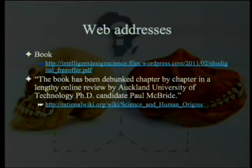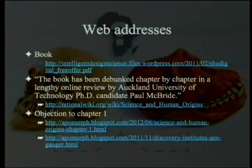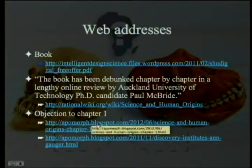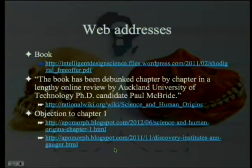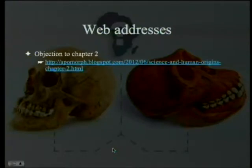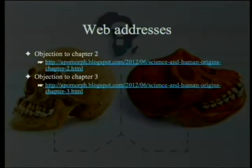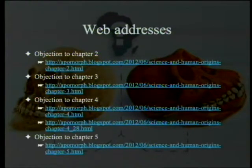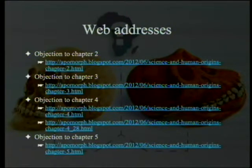The book has been, at least an attempt at debunking has been done by somebody by the name of Paul McBride, and that's the blurb from Rational Wiki. The objections to chapter one are found in association, but another one that's not actually in association — you have to kind of look for it. To chapter two, to chapter three, which is the one we'll be concentrating on now, to chapter four, and to chapter five. There's one other one that I'll put up when we come to it, that gives us where we're looking at chapter three in particular, one small feature of it.